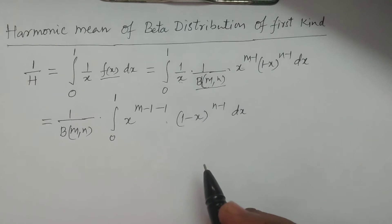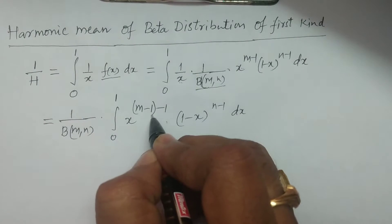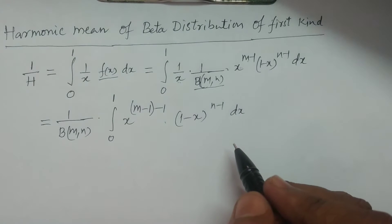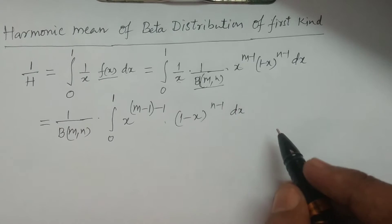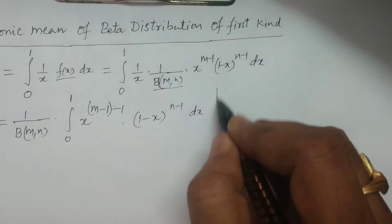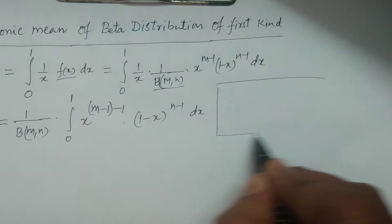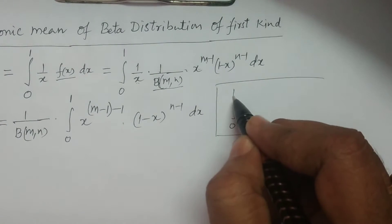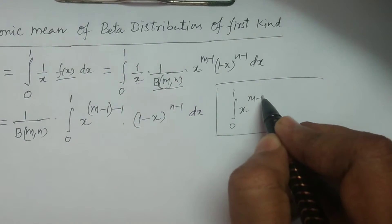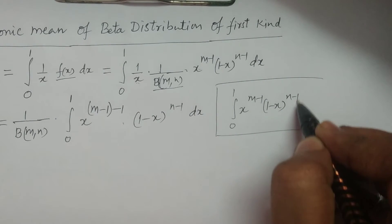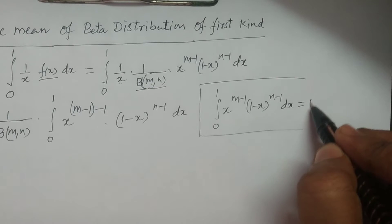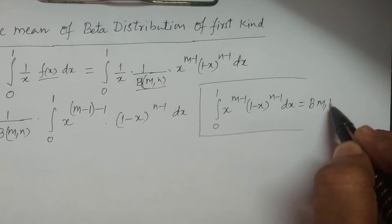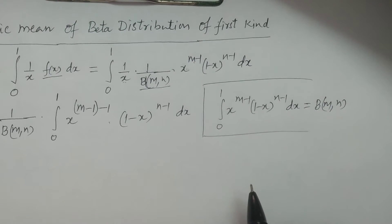This is the integration we need to solve. This integration can be resolved by using the beta distribution of first kind integral formula. The beta integral formula is: integral from 0 to 1 of x power m minus 1 times 1 minus x whole power n minus 1 dx is equal to beta(m, n).